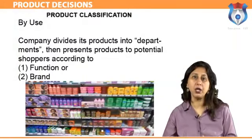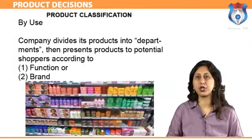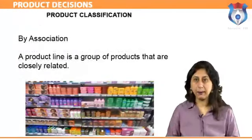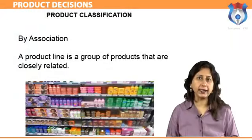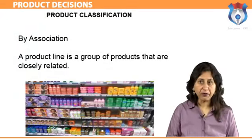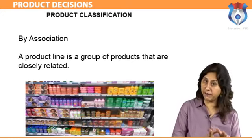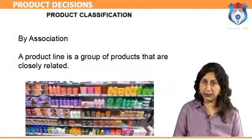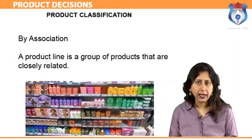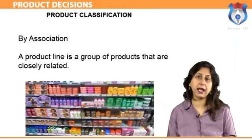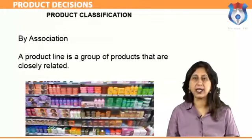Sears uses the departments and product groupings with the intention of helping customers browse products by function or brand within a traditional department store structure. By association, a product line is a group of products that are closely related — either because they function in a similar manner, are sold to the same customer groups, are marketed through the same types of outlets, or fall within given price ranges.